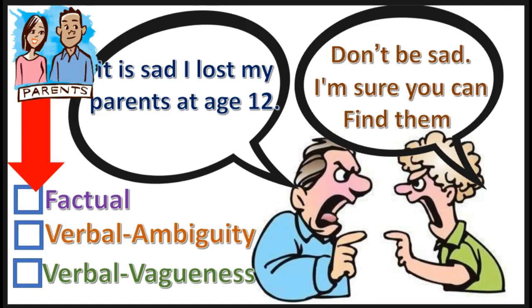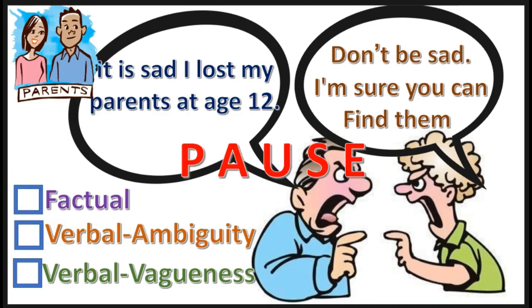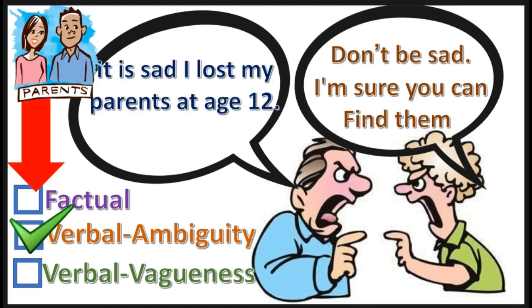Here's another practice problem — select the correct answer. Press pause, the answer will appear in three, two, one. That's right — verbal ambiguity. The word 'lost' can have two different meanings.